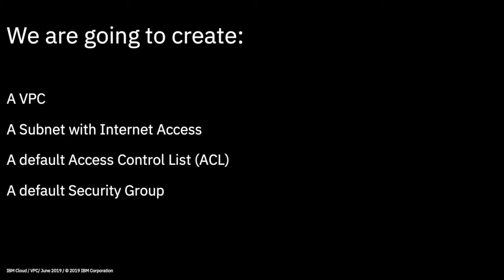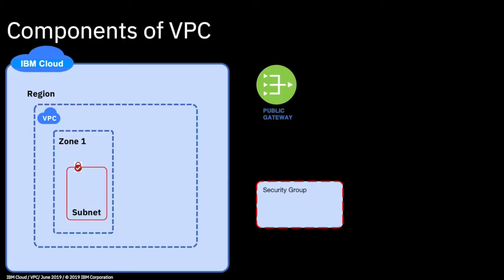What we're going to do is go to our console at cloud.ibm.com and create a VPC. We're going to create the subnet with internet access, create a default access control list or ACL, and also create a default security group as well. To put that into a diagram, we're going to effectively create what you see on the picture here.